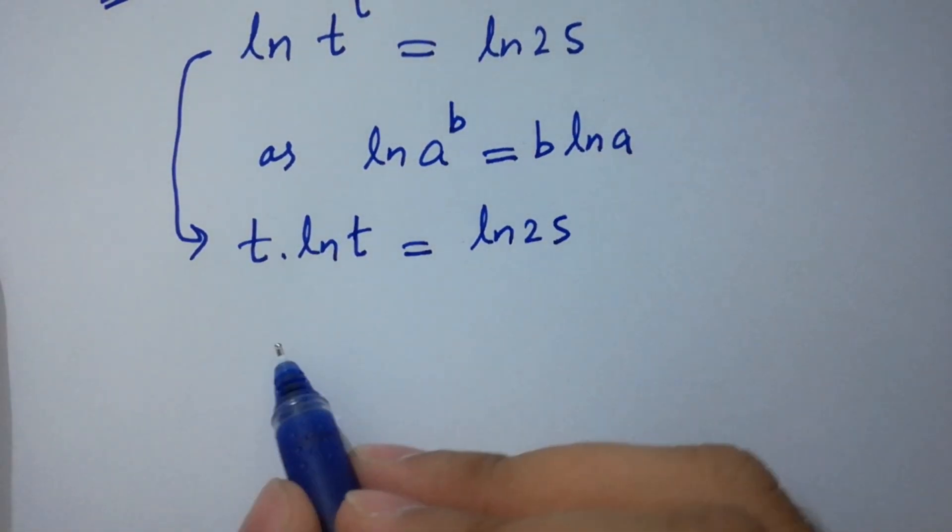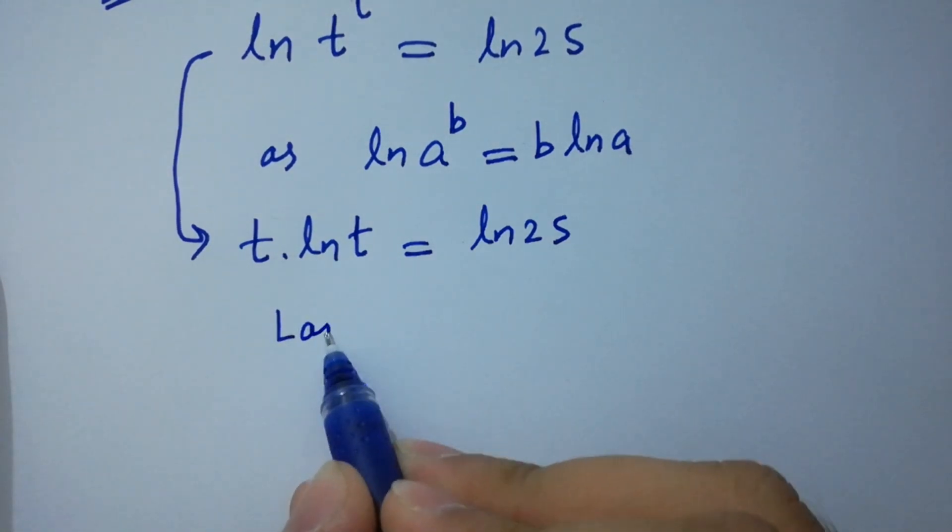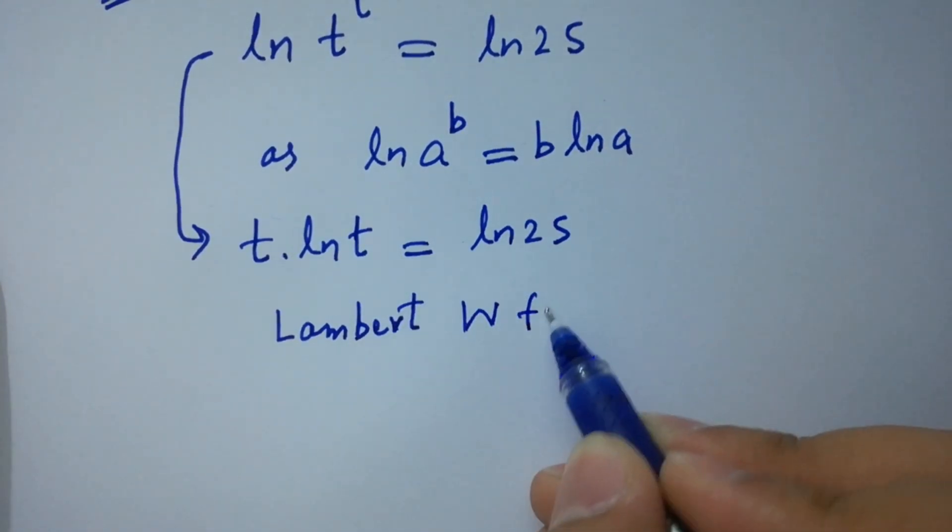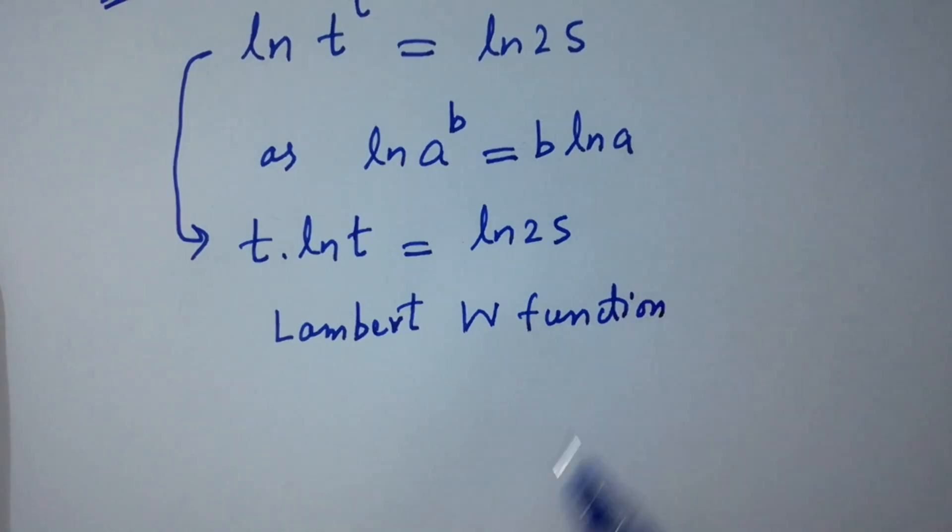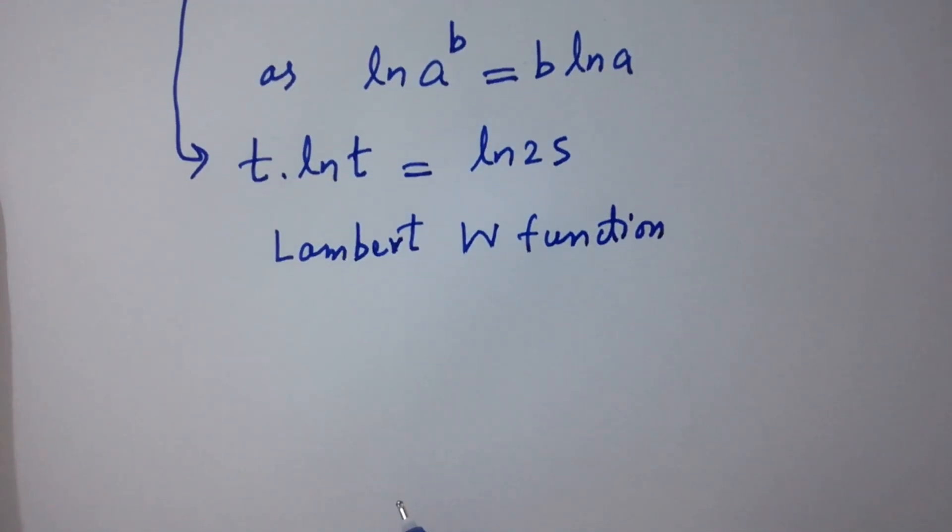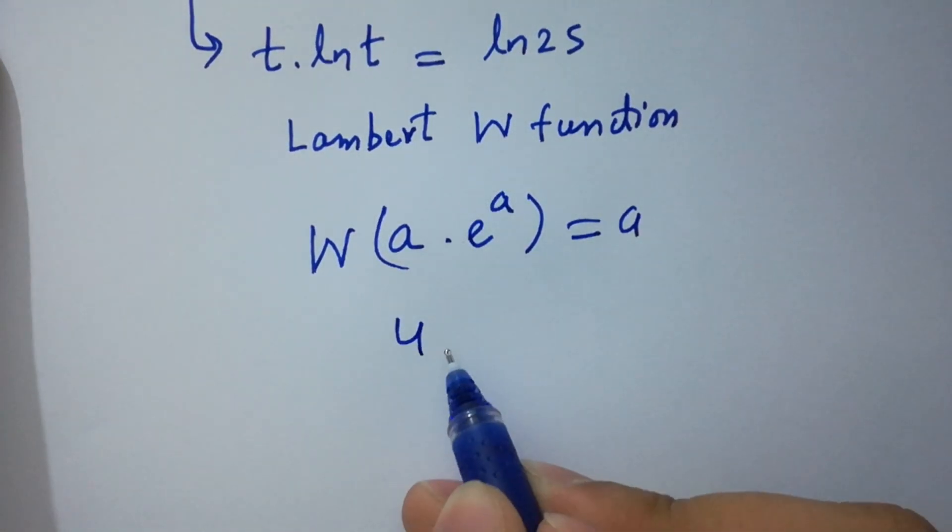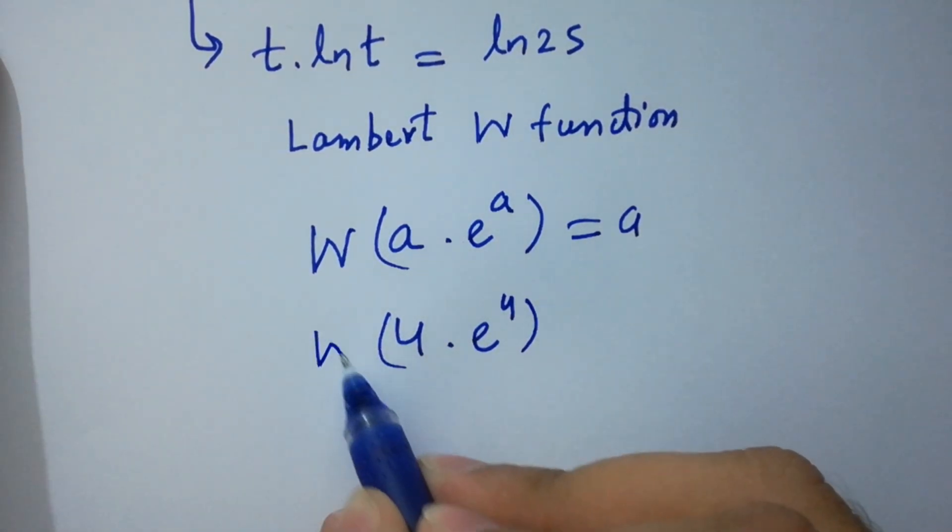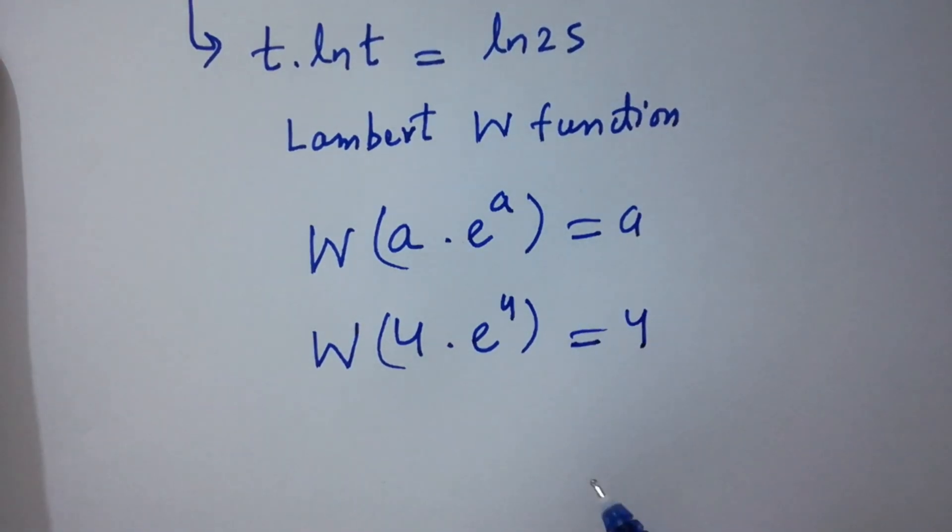I am going to apply here Lambert W function, which is very easy to understand. If you have an expression a times e to the power a, if you apply here Lambert W function, then it will be equal to a. Like if you have 4 times e to the power 4, apply Lambert W function, it will be equal to 4. I hope you understood.